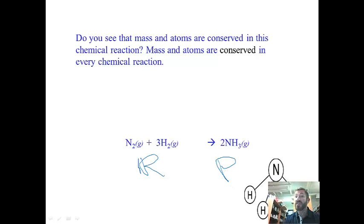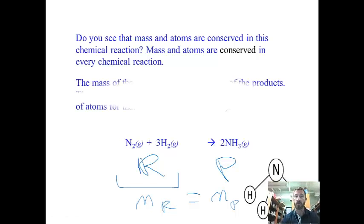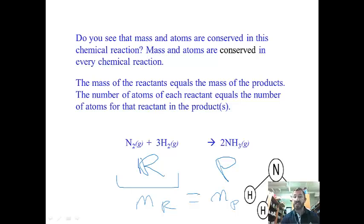That shows that the number of atoms are conserved. And if you were to weigh or take the mass of these reactants, the mass of your reactants would be equal to the mass of your products, because all the atoms weigh the same. We've not lost any atoms. All we've done is broken some bonds, reformed them, rebonded them, and formed a new substance. So we say mass and atoms are both conserved in every chemical reaction. So the mass of the reactants equals the mass of the products. The number of atoms of each reactant equals the number of atoms for the product.